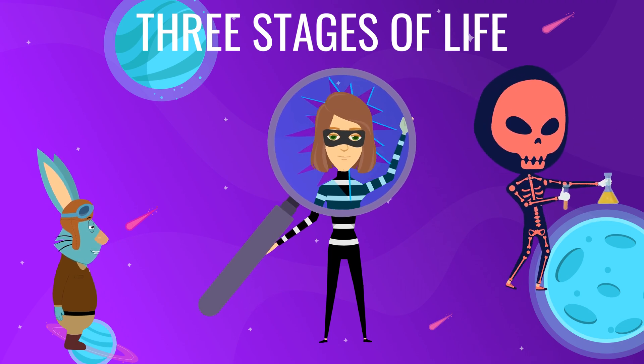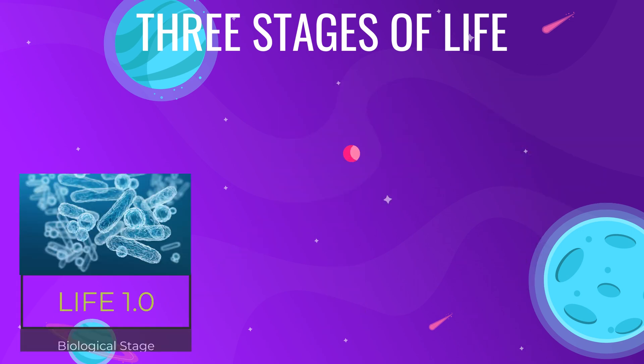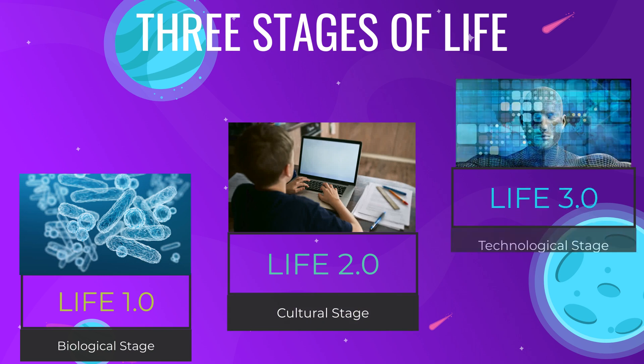Generally, we classify life into three stages: Life 1.0, the biological stage; Life 2.0, the cultural stage; and Life 3.0, the technological stage.